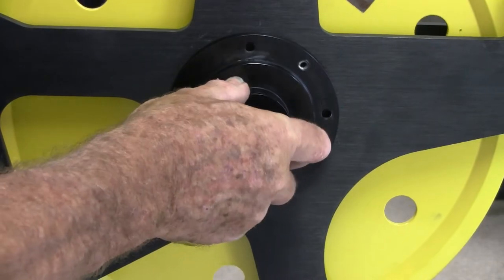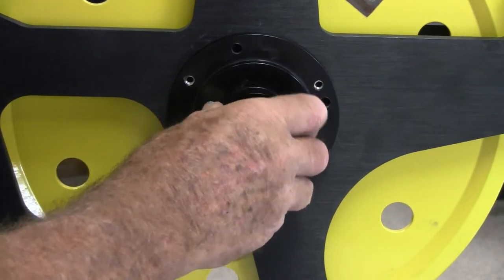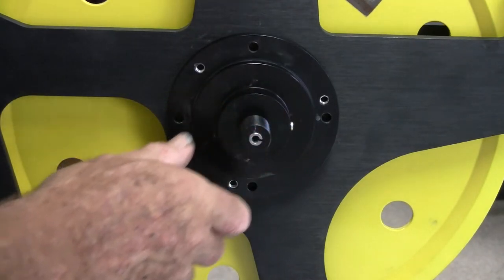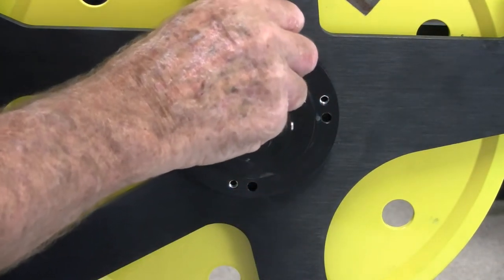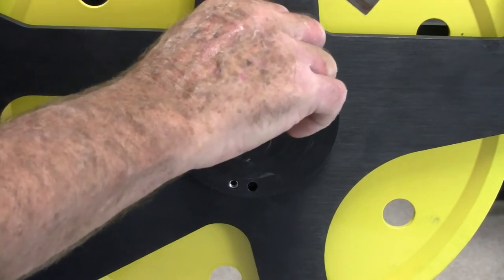Rotate the hub so that the grease fitting faces to the right and the four screw holes on the hub align with the holes on the frame. Insert the screws finger tight only at this time.